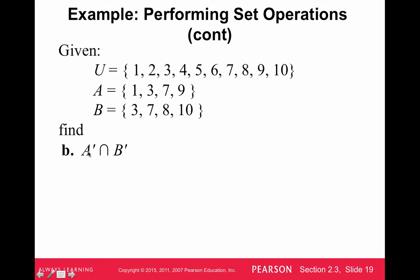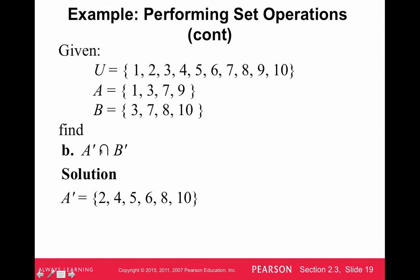This example asks us to find A' ∩ B'. We list the complement of A first, then the complement of B, and then intersect them. The complement of A is {2, 4, 5, 6, 8, 10}. The complement of B is {1, 2, 4, 5, 6, 9}. Then we intersect these two sets — finding what they have in common — giving {2, 4, 5, 6}.